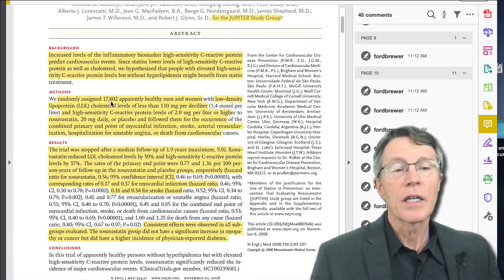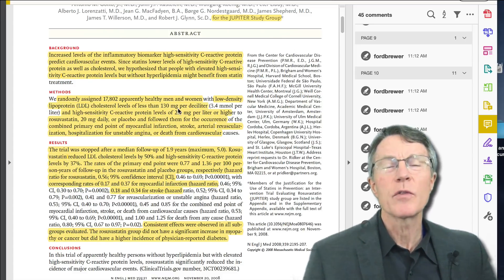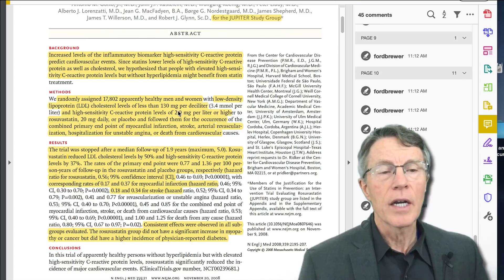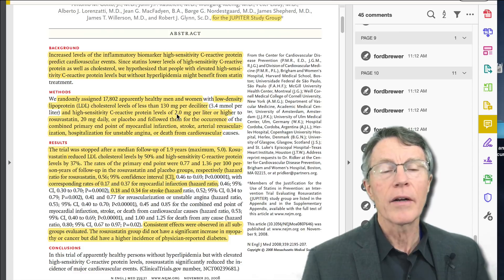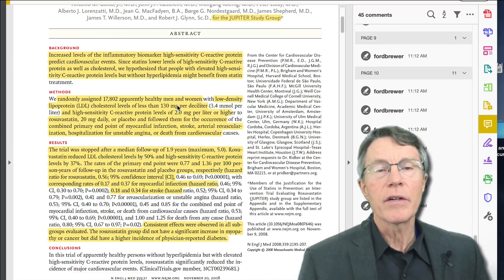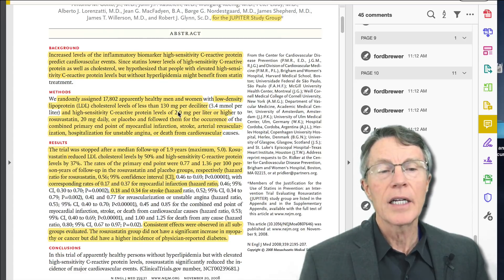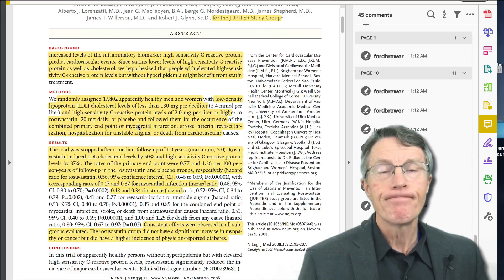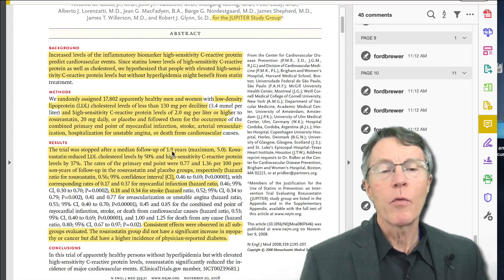So how did they do it? This is a big study, multi-centers, 17,802 apparently healthy men and women with LDLs less than 130. The average was about 100. We'd love to get that below 70 these days but at that point in time, we thought 100 was okay. C-reactive protein levels were 2 or higher. So again, they had what was considered a normal cholesterol and a high C-reactive protein. They gave one group 20 milligrams of Crestor and another group a placebo. The trial was stopped after a follow-up of 1.9 years.